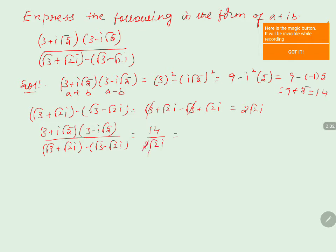Simplifying 14 divided by 2 root 2i gives us 7 by root 2 into i. Since root 2i is an irrational part in the denominator, we will rationalize it by multiplying and dividing with root 2i.